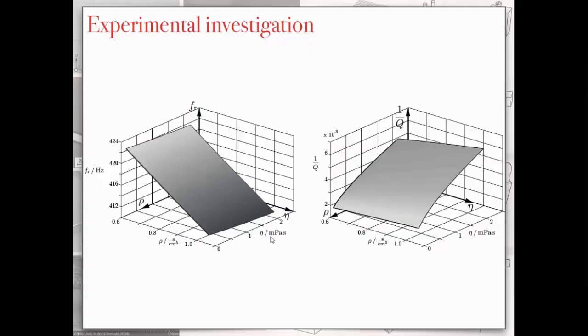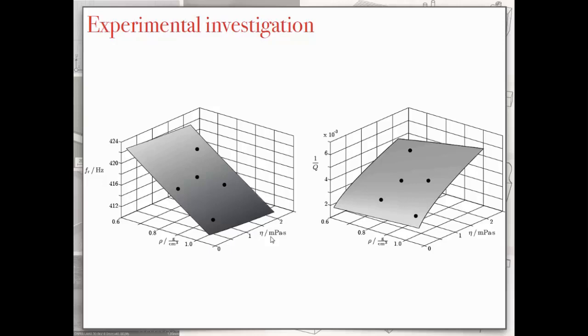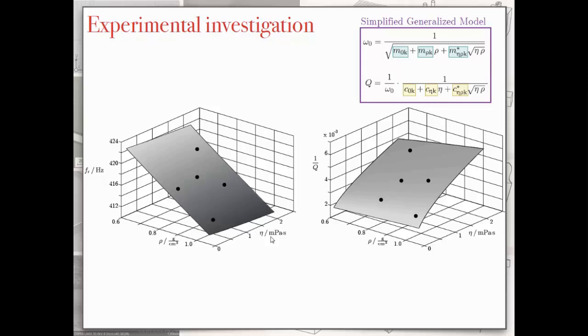So this was more a theoretical work. But to make it more solid, of course, we want to characterize them experimentally. And if you choose random liquids, these random liquids will be distributed somewhere on these surfaces which you will get. So as I told you, resonance frequency, which is depicted on the left, and quality factor depend, as I've already said multiple times, depend on both viscosity and mass density. This is enough if you want to characterize the parameters in the simplified model.